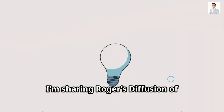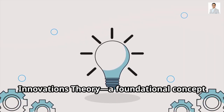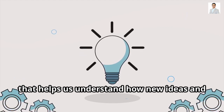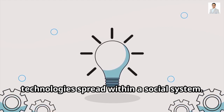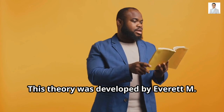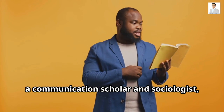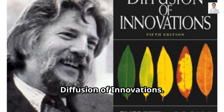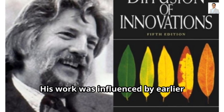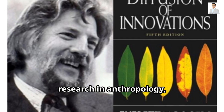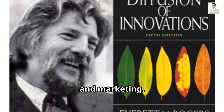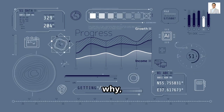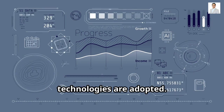Hey there. Today I'm sharing Rogers' Diffusion of Innovations Theory, a foundational concept that helps us understand how new ideas and technologies spread within a social system. This theory was developed by Everett M. Rogers, a communications scholar and sociologist, first introduced in his 1962 book, Diffusion of Innovations. His work was influenced by earlier research in anthropology, sociology, and marketing. Rogers' theory outlines the process of how, why, and at what rate new ideas and technologies are adopted.